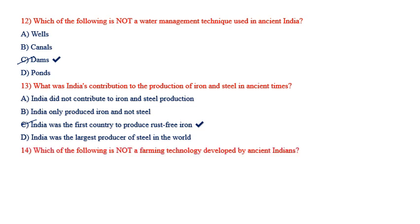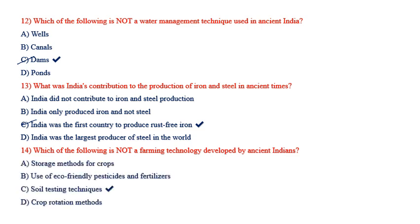Which of the following is not a farming technology developed by ancient Indians? Options: storage methods for crops, use of eco-friendly pesticides and fertilizers, soil testing techniques, crop rotation methods. Storage methods for crops, use of eco-friendly pesticides and fertilizers, and crop rotation methods were used by ancient Indians — but soil testing techniques were not used at that time.